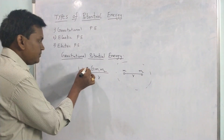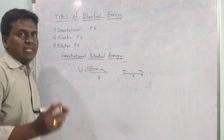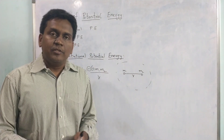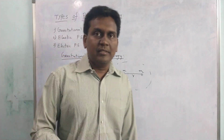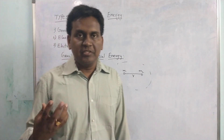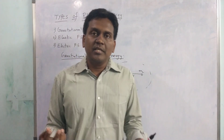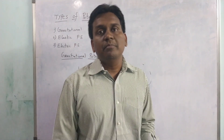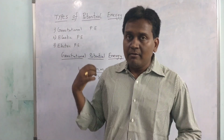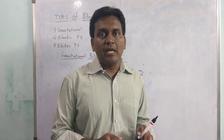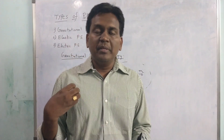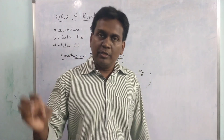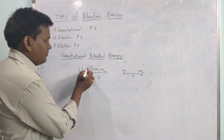The minus sign here represents that the force of gravitation is always attractive in nature. If you take the force between two charges, similar charges repel each other and opposite charges attract each other — so there is both attraction and repulsion between charges. But coming to gravitational potential energy, this force is always attractive in nature. Always the two masses will attract each other by virtue of their masses.